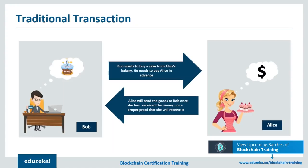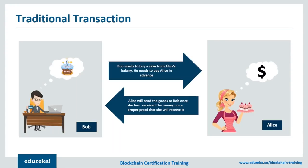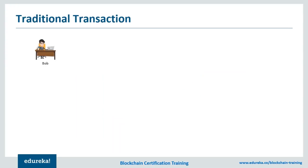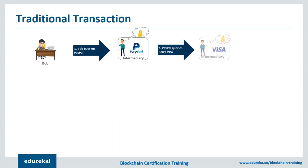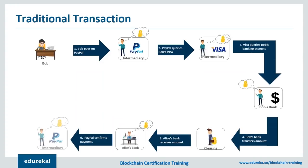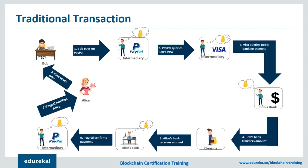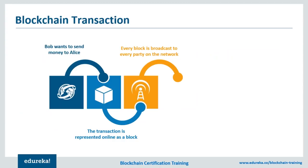To get a deeper understanding, let's compare a blockchain transaction with a traditional transaction. Suppose our friend Bob wants to buy a cake from Alice. Traditionally, Bob decides to pay via PayPal, so he logs on to his PayPal account and initiates the transaction. PayPal queries Bob's registered Visa on their server. Visa then initiates a transaction with Bob's bank account. Bob's bank checks if he has sufficient funds, then transfers the money through another intermediary — a clearance agent — who goes to Alice's bank to complete the transaction. Intermediaries like PayPal, Visa, Bob's bank, and the clearance agent all take a cut from the principal amount in the name of a transaction fee.